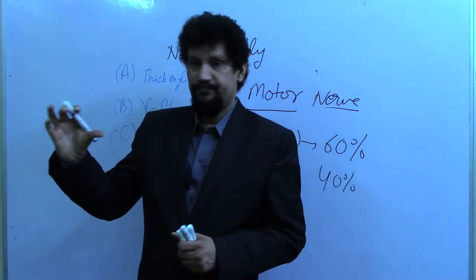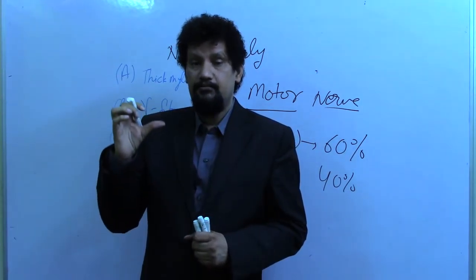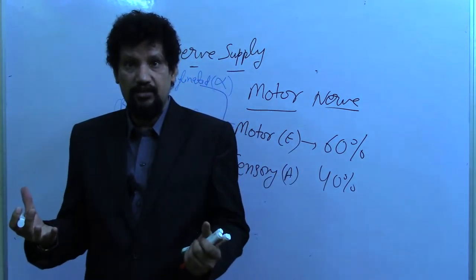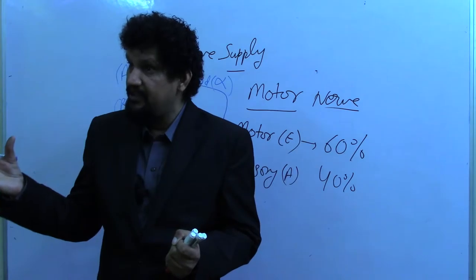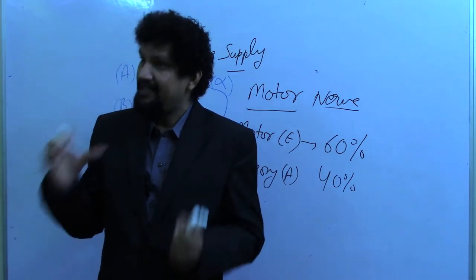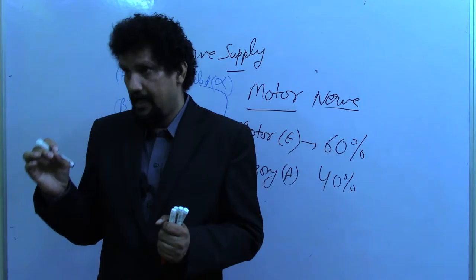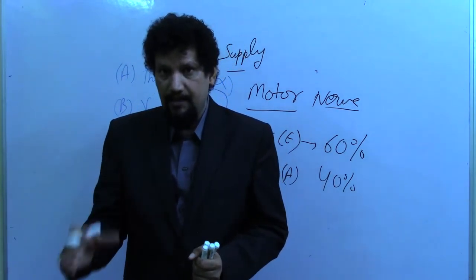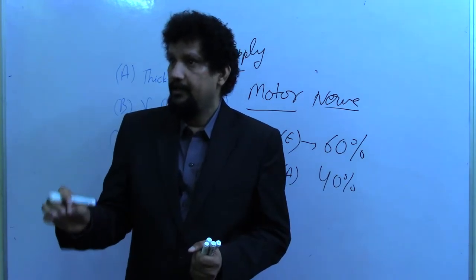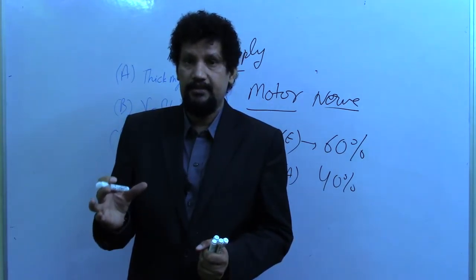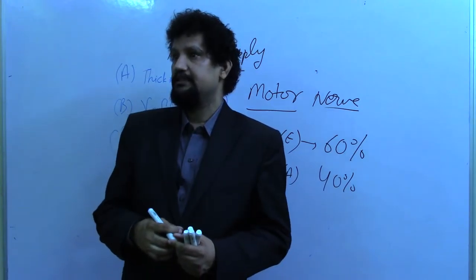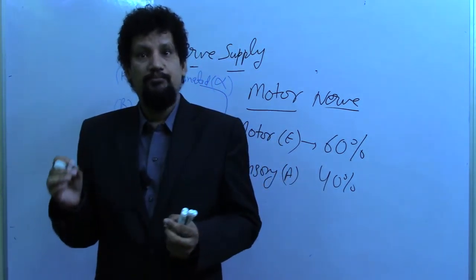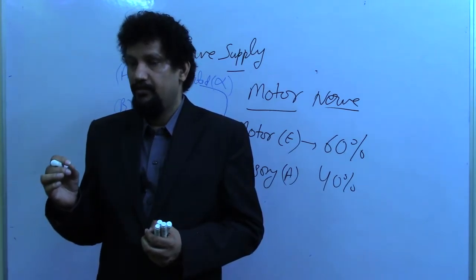So the thickest and heavily myelinated fibers are the alpha neurons or alpha axons. The comparatively thin but myelinated fibers are the gamma fibers. The fine, non-myelinated fibers supplying the smooth muscles of the vessels are the post-ganglionic sympathetic fibers. These are the three types of efferent or motor fibers in a motor nerve.